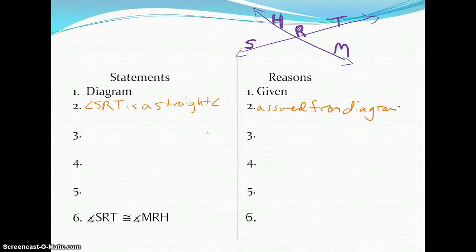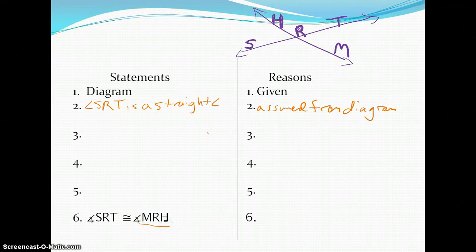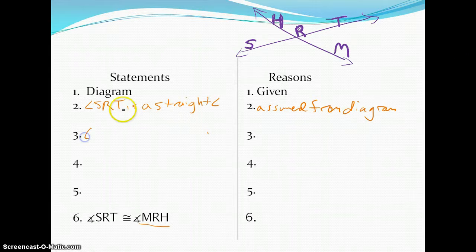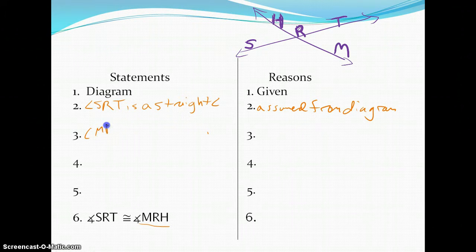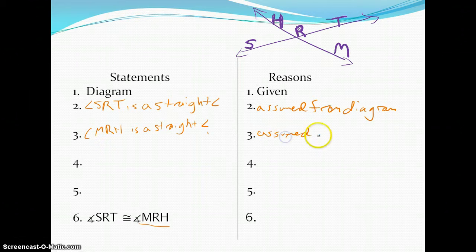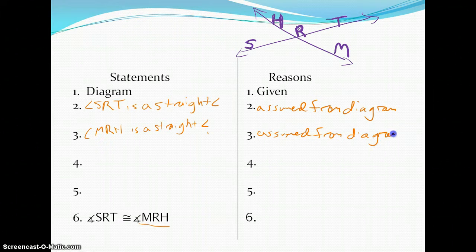I'm also going to do that for my other line slash angle. I'm going to make sure that I use the same order of letters as I have in my prove statement, just like I did for my first one. I'm going to say angle MRH is a straight angle. Reason being, it's assumed from the diagram.